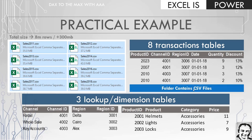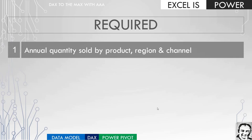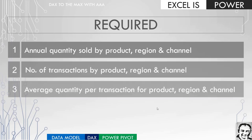We have these eight files in a folder of CSV files. We have a small table formatted as a table inside an Excel workbook, and also a normal range inside the same workbook. The product table is saved in a separate Excel workbook. We want to connect to all of this information — eight transaction tables and three dimension tables — each saved in a separate file. We are going to try to answer three requirements: annual quantity sold by product, region, and channel; number of transactions by the same dimensions; and average quantity per transaction.